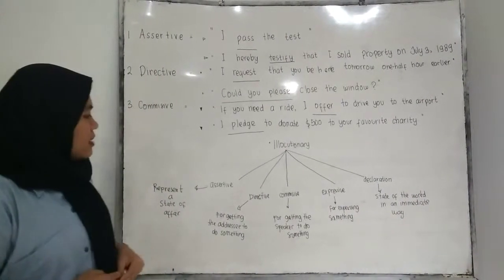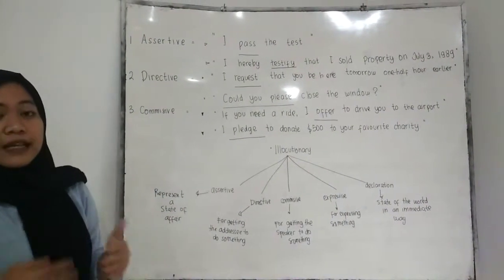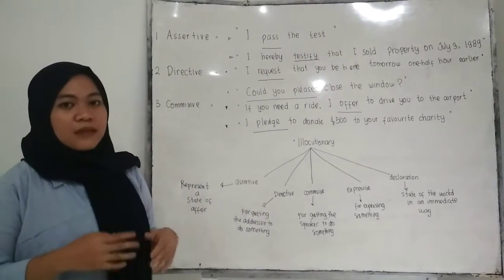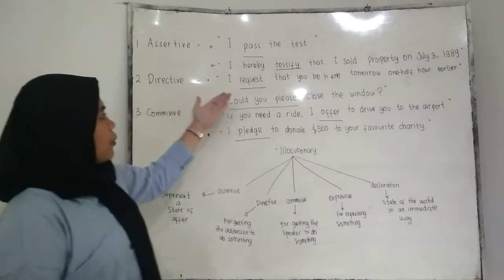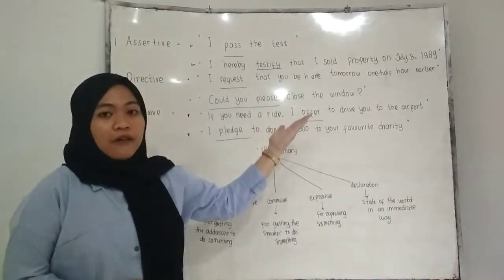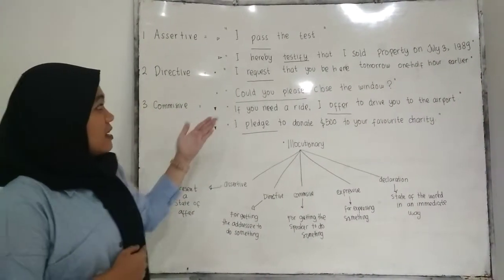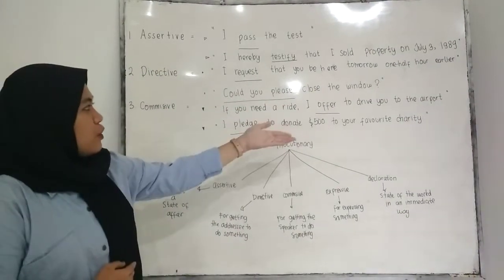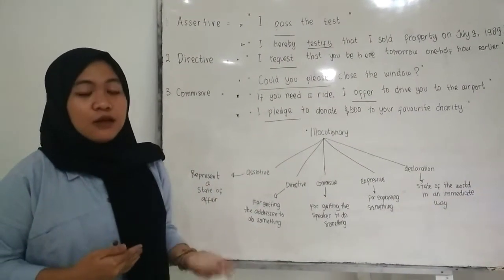The next is directive. What is directive? Directive is an illocutionary act for getting your addressee to do something, such as commanding or ordering. For example: 'I request that you be here tomorrow,' and 'Could you please close the window?' The word 'request' and the phrase 'could you please close the window' mean that the speaker wants the addressee to do something.